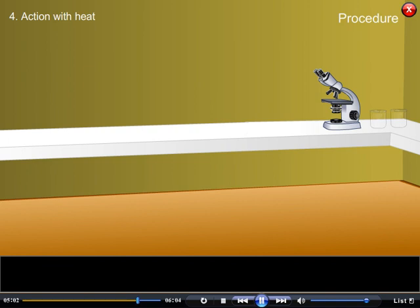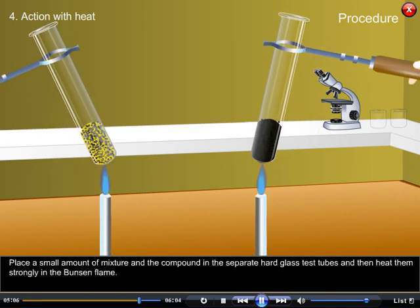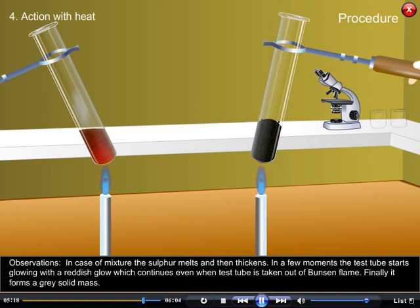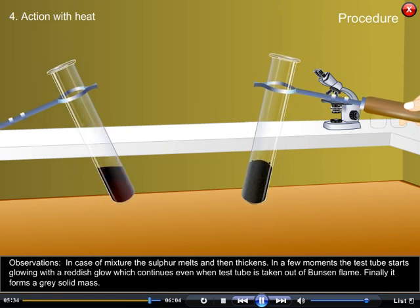4. Action with heat: Place a small amount of mixture and the compound in separate hard glass test tubes and then heat them strongly in the Bunsen flame. Observations: In case of mixture, the sulphur melts and then thickens. In a few moments, the test tube starts glowing with a reddish glow which continues even when test tube is taken out of Bunsen flame. Finally, it forms a grey solid mass.